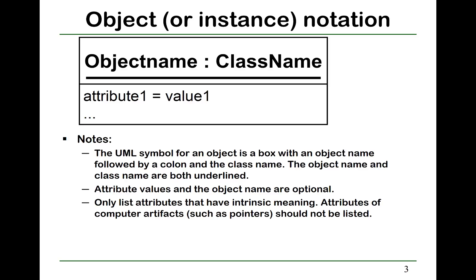In UML, an object is represented in two boxes. In the first box, you have the object name, a colon, the class name, and a line below them. In the second box, you have a list of attributes and their values.